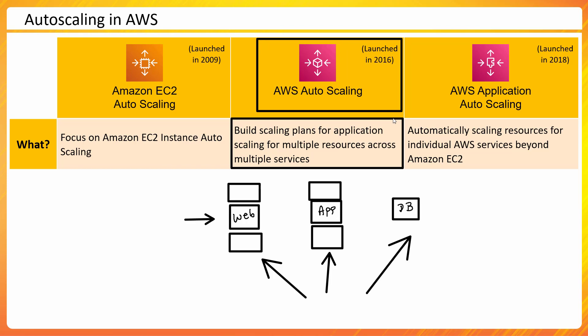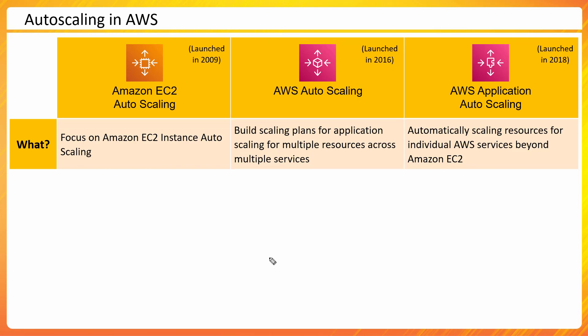AWS Auto Scaling acts as an umbrella, allowing you to configure multiple policies into one scaling plan. It also helps identify available scalable resources — for example, a DynamoDB table, an ECS service, or Amazon Aurora read replicas. Instead of managing them separately, it allows you to create a single scaling plan for multiple services within your AWS environment.